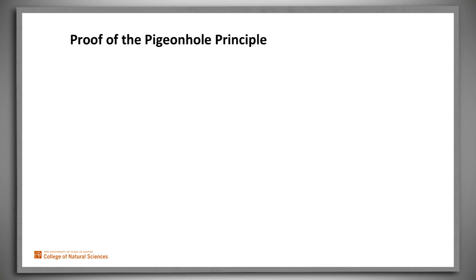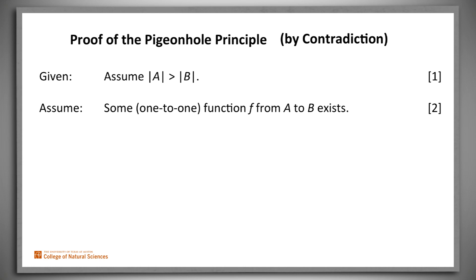The proof of the pigeonhole principle is simple. We'll do it by contradiction. Assume that the number of elements in A is greater than the number of elements in B. Now assume, contrary to our claim, that there does exist a one-to-one function from A to B.